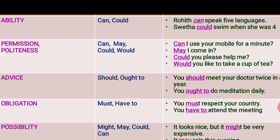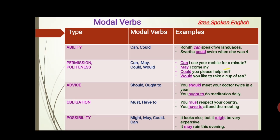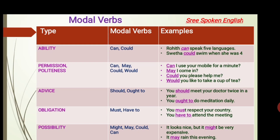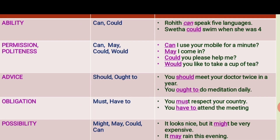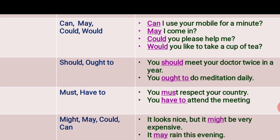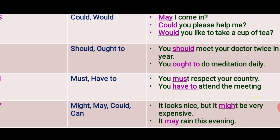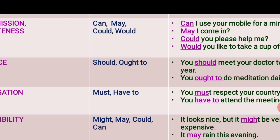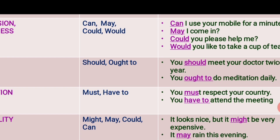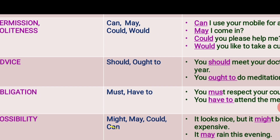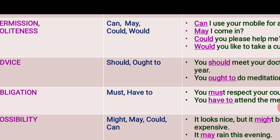The next type is possibility, expressed by 'might', 'may', 'could', and 'can'. Example: It looks nice but it might be very expensive — that is a possibility or assumption. Another example: It may rain this evening — that is also a possibility. It's an expectation — it may occur or not.